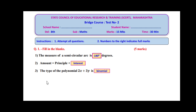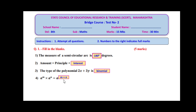Question number four: a raised to m multiplied by a raised to n is equal to a raised to ___. We know the laws of indices. The first rule states that when the bases are the same and the indices are different, the result is a raised to the sum of the indices, that is m plus n. Therefore, a^m × a^n = a^(m+n).